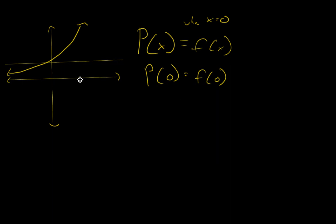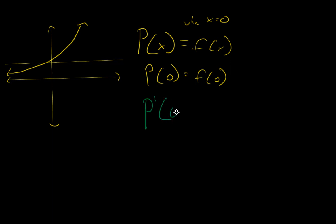That's an okay approximation over here — it's going to be close, but it's not that great. How can we improve upon this? Well, we're going to add something to our approximation. We're going to say p prime of zero equals f prime of zero.